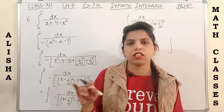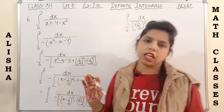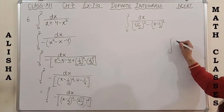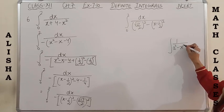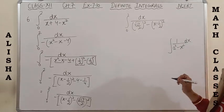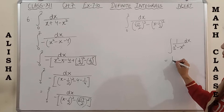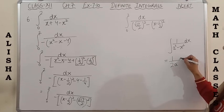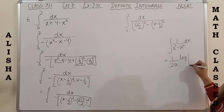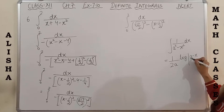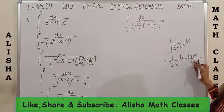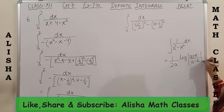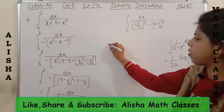The formula is: integral of 1 upon (a² - x²) dx equals 1/(2a) × log|(a + x)/(a - x)| + c. So using this formula with a = √17/2.